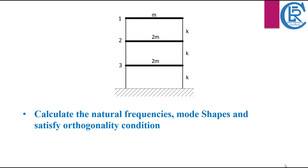We have a multi-story structure with specified masses for each slab and column stiffness values. The mass at the top story is m, the first floor has a mass of 2m, and the ground floor also has a mass of 2m. Likewise, the stiffness of each column is k for every story. By the end of this video you will have a solid understanding of how to tackle these intricate problems in structural engineering.